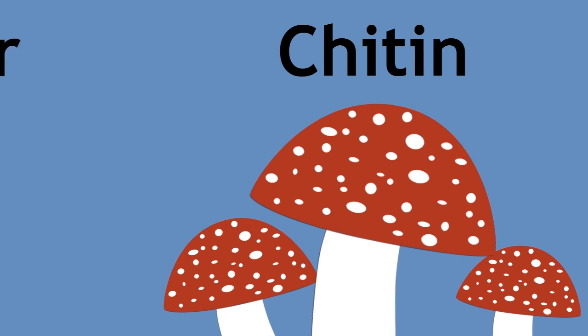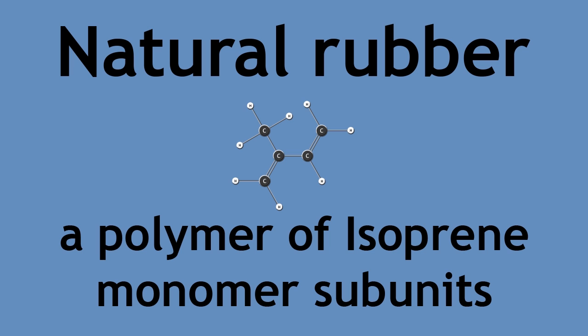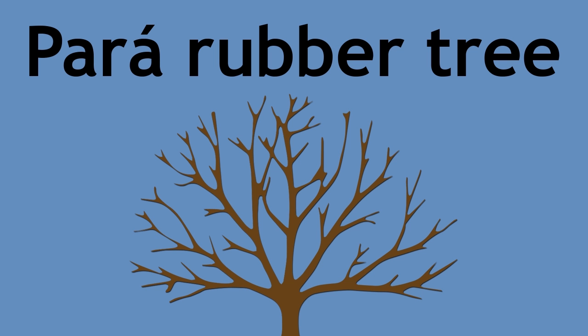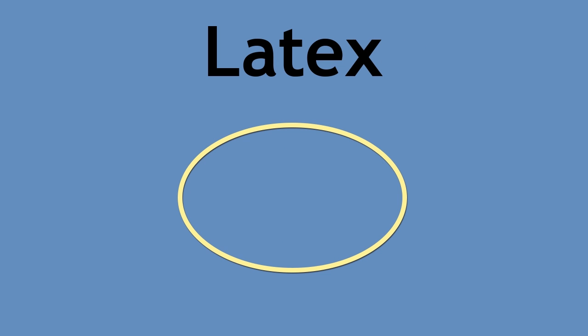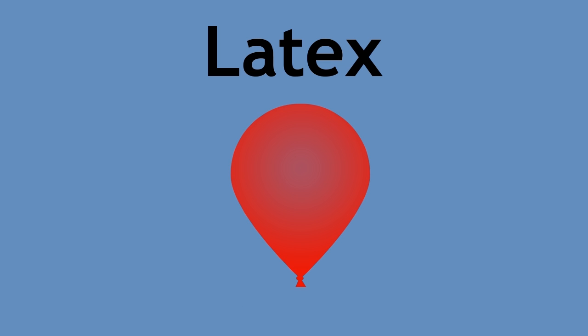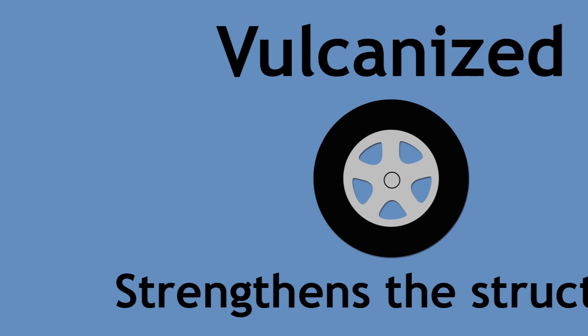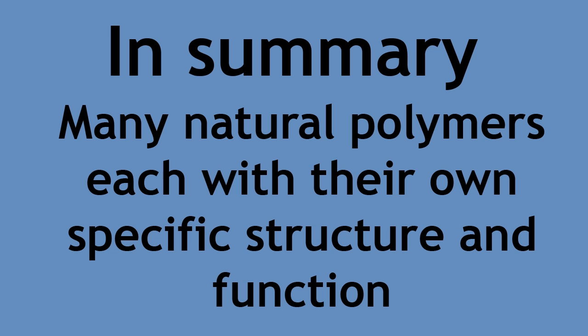Natural rubber is also a polymer of isoprene monomer subunits. It is found in latex, a white milky substance tapped from para-rubber trees, and can be used to make latex gloves, erasers, elastic bands, adhesive, balloons, and many other everyday materials. The rubber in car tires is vulcanized rubber, meaning sulfur has been added to introduce cross-linking between the polymers, which strengthens the structure. To summarize, there are many natural polymers, each with their own specific structure and function.